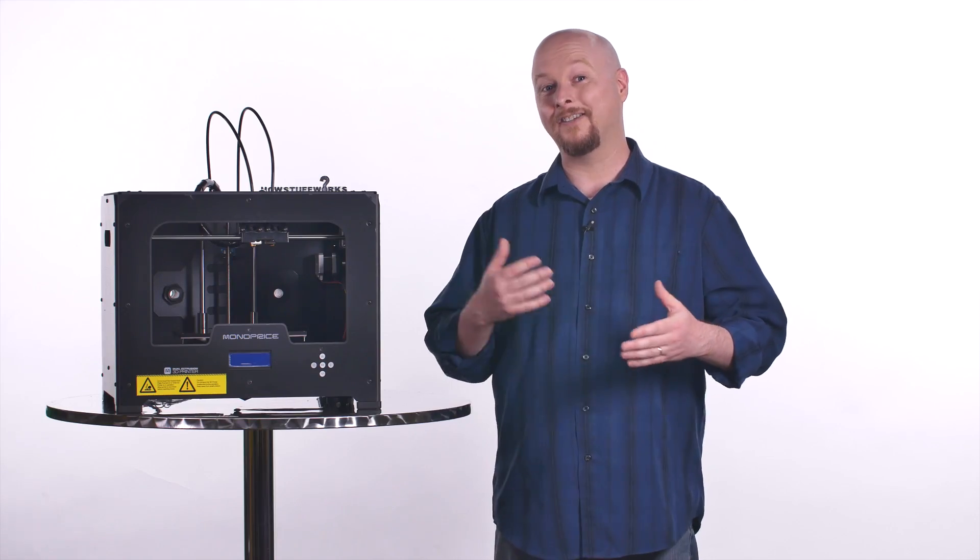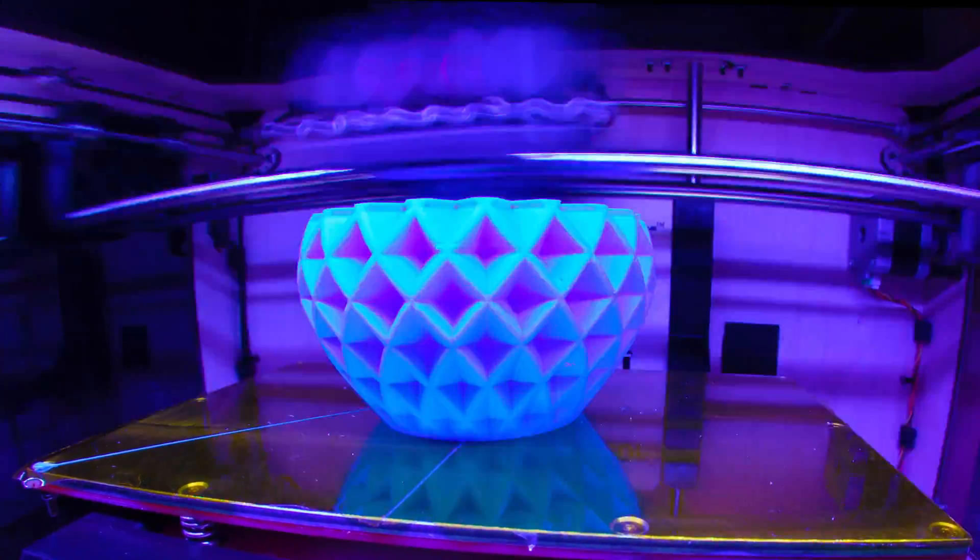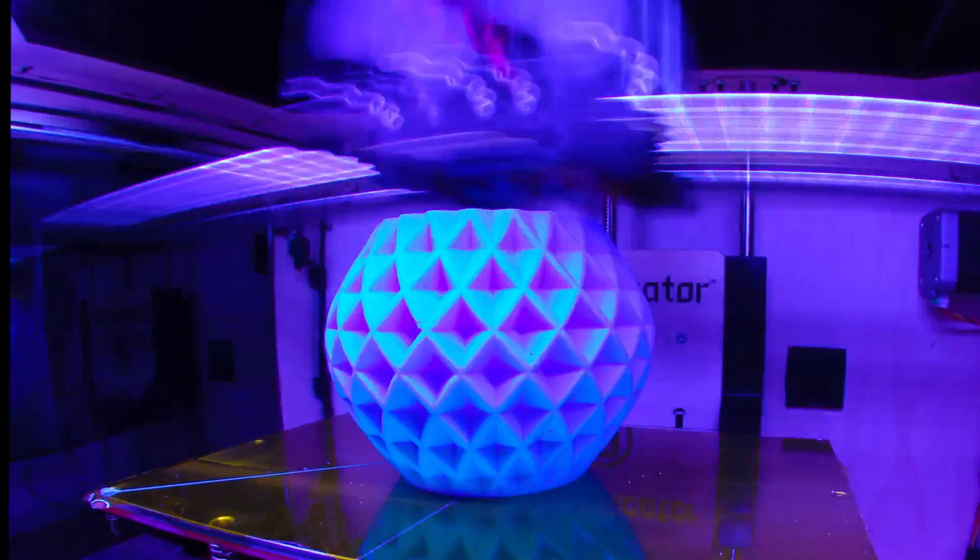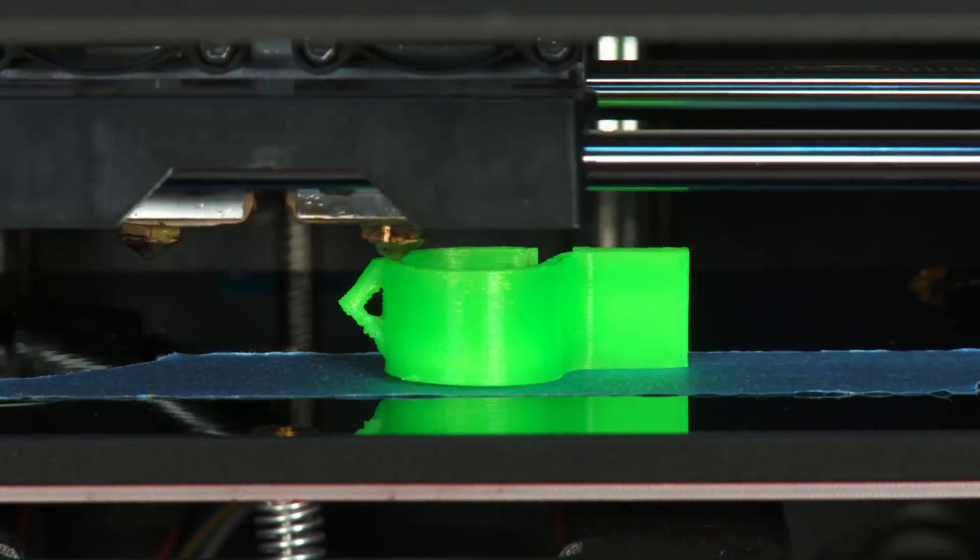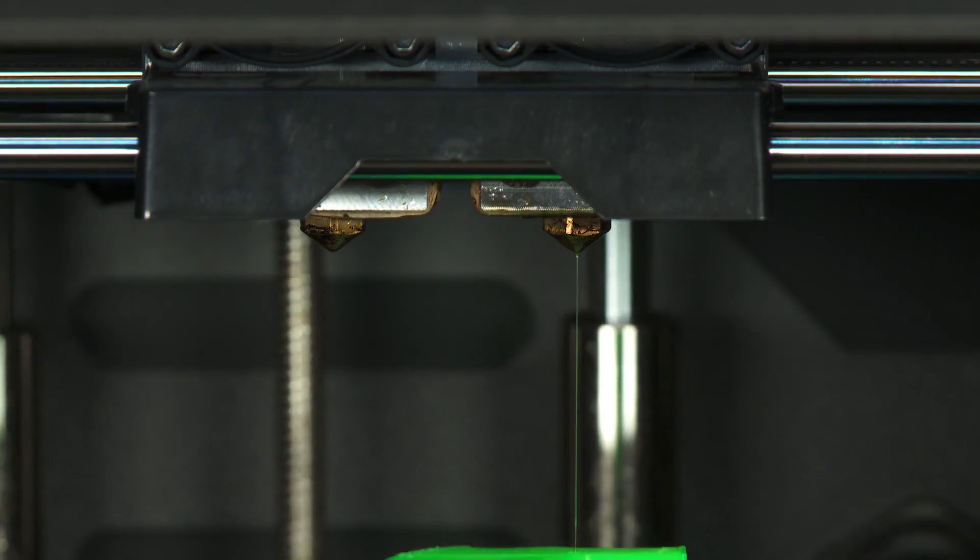3D printers work in a process called additive manufacturing. It's all about building an object by laying down layer after layer of material until you're done. Now additive manufacturing means you waste less material, you're just using what you need to build whatever you want.